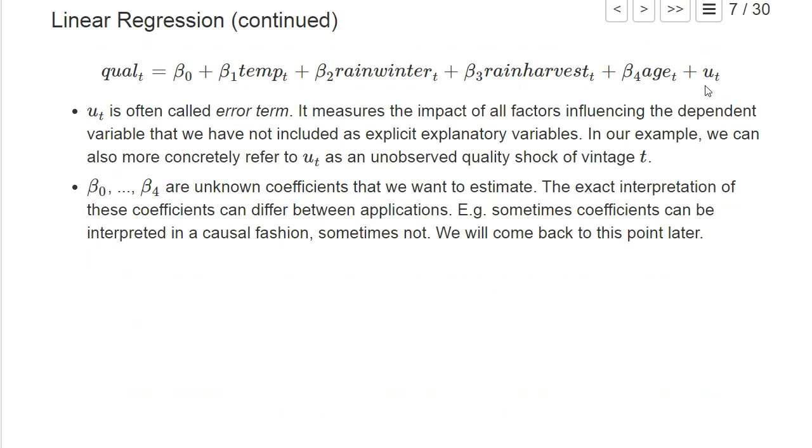Then we have a final variable called u_t, which is often called an error term (you can also use epsilon_t to denote it). It measures all other factors that influence the dependent variable, the quality of the wine, which we have not explicitly included as explanatory variables—for example, different weather factors or rainfall in May. We can call u_t an unobserved quality shock of the vintage t, all the other factors that influence quality which we don't explicitly account for in our regression model.